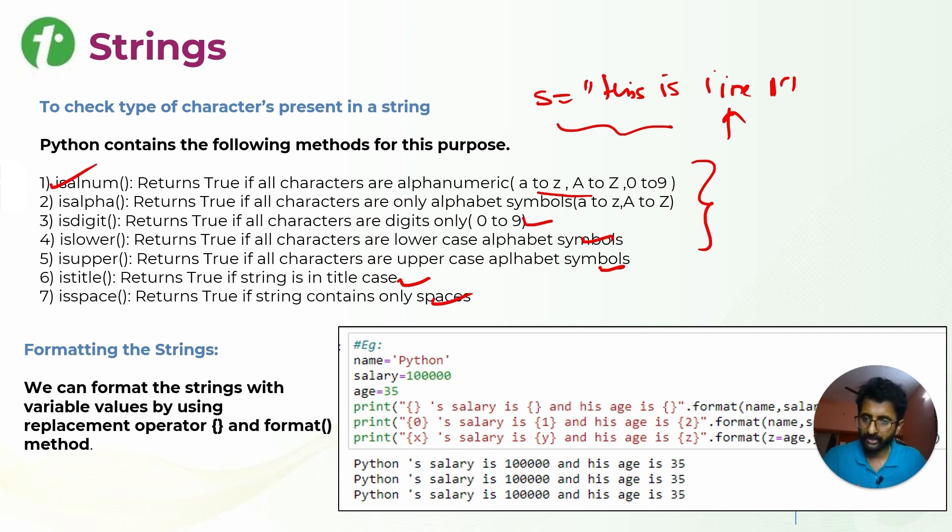You can format your string as well. For example, this is a line of statement which you are printing with print function. But every time you want these values to be given by the user, you can use input function. Whatever input is there, it will be stored to this variable. So whenever you are using dot format method and using opening and closing curly braces, you can tell what exact values you wanted to add dynamically. Here it is name and salary, so name will be python, salary will be 1 lakh. Its output will be python's salary is 1 lakh and its age is 35.